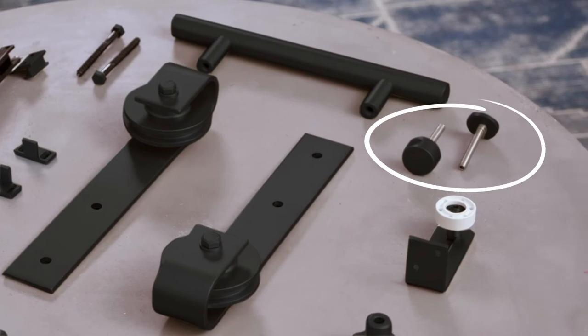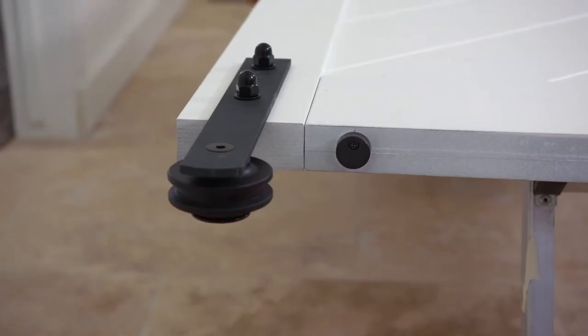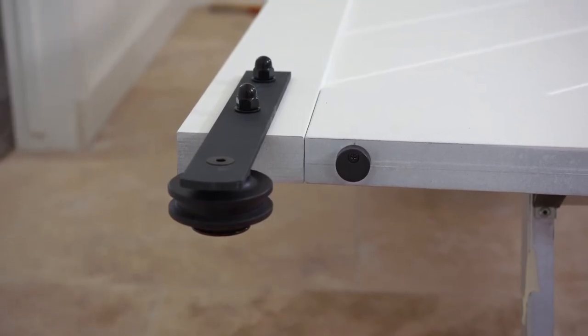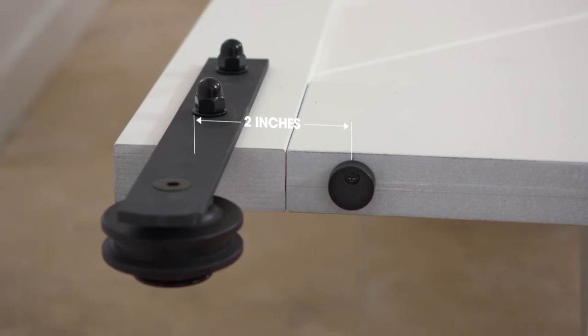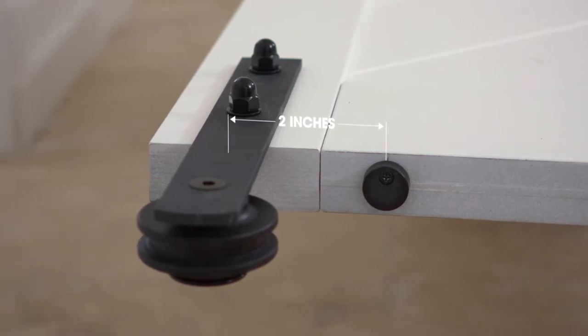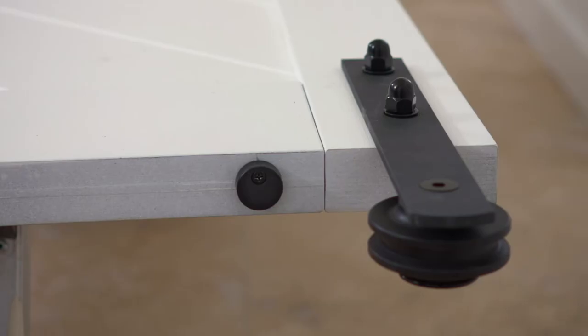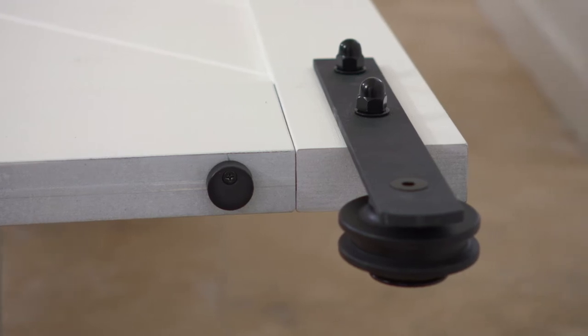Next we'll install the anti-jump discs. Center the disc on the top edge of the door, a minimum of two inches away from the inside edge of the hanger. Make sure the hole is closest to the front of the door. Do the same on the other side.